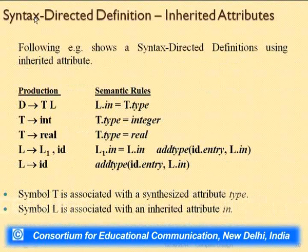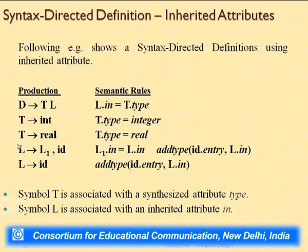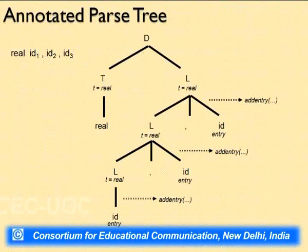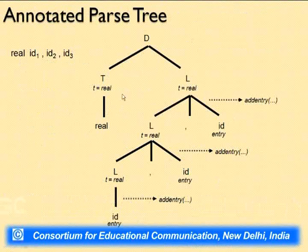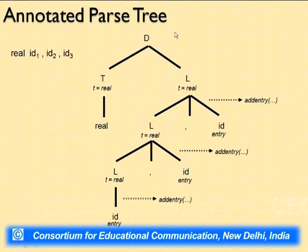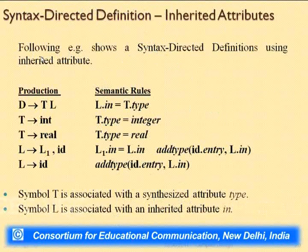We now quickly run through an inherited attribute example. It is a grammar for declarative statements: D derives T L, T derives int, T derives real, L derives L1 comma id, L derives id. In this grammar, we want to find the semantic information type — we want to know the type of each identifier in the declaration. The question is how this type information will flow through the system.